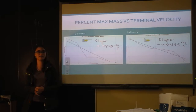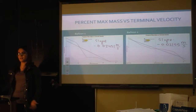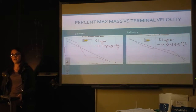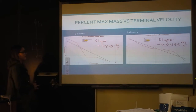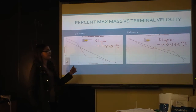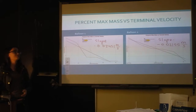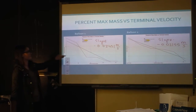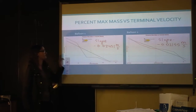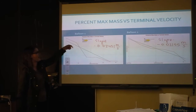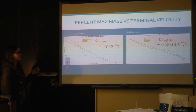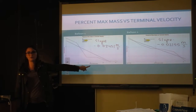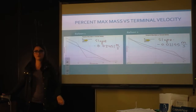I graphed the percent of the maximum mass because each balloon has a different maximum mass it can carry due to different amounts of helium. Based on the density of helium, for every gram you add there's a volume of helium that can carry that mass. So I graphed the percent of maximum mass against terminal velocity. The first balloon had more helium than balloon two, so its slope was steeper — terminal velocity decreases by about this much per percent of maximum mass, which makes sense because one percent of the maximum mass differs between balloons.